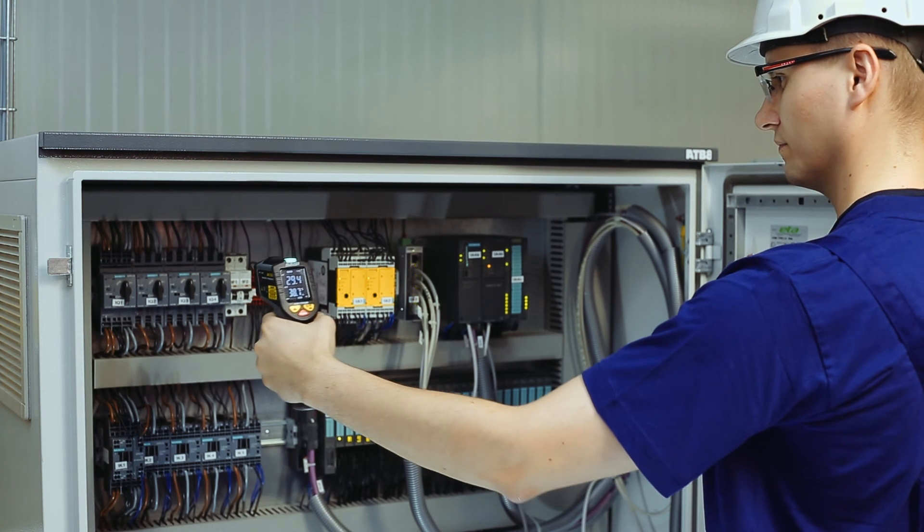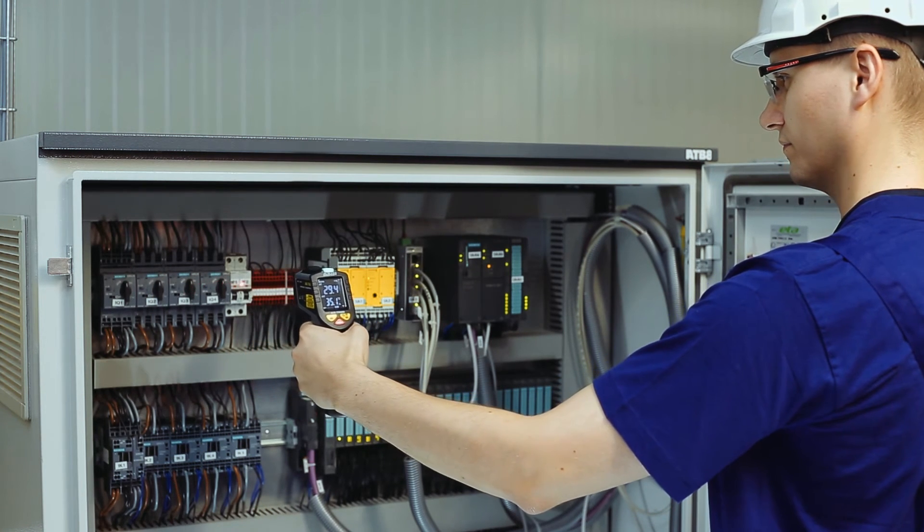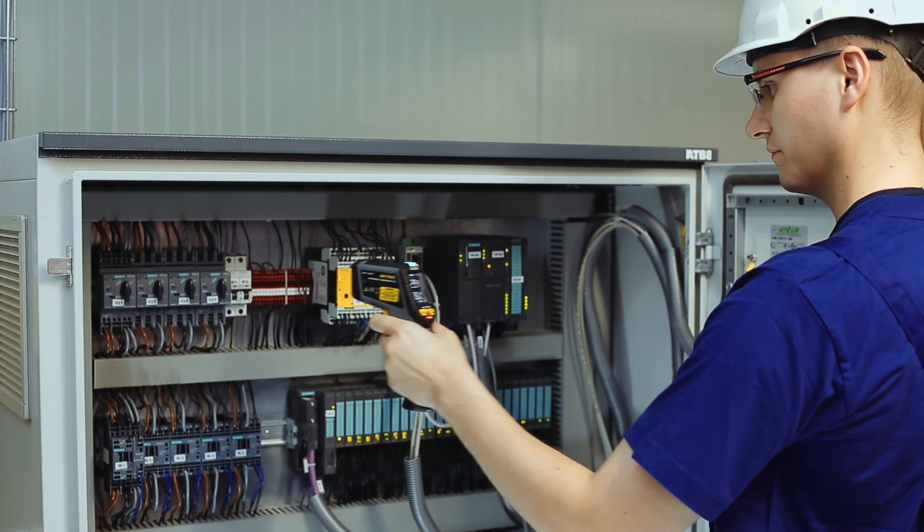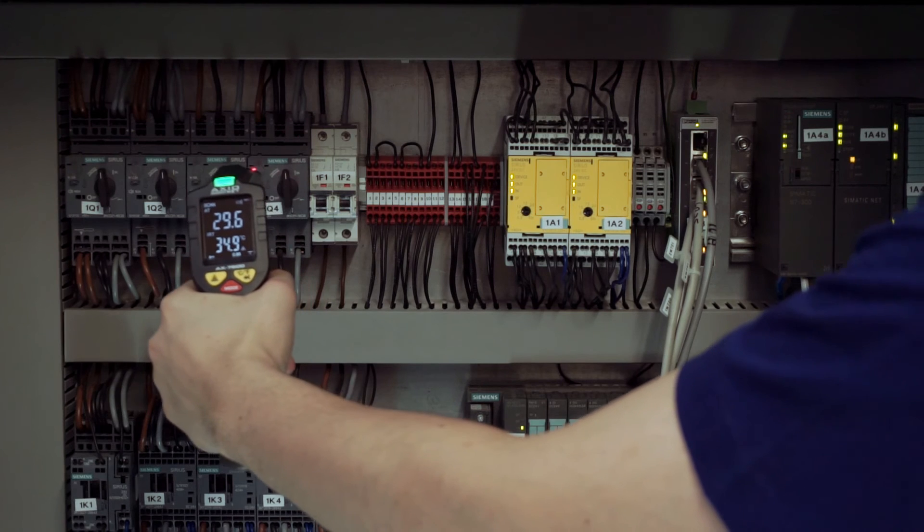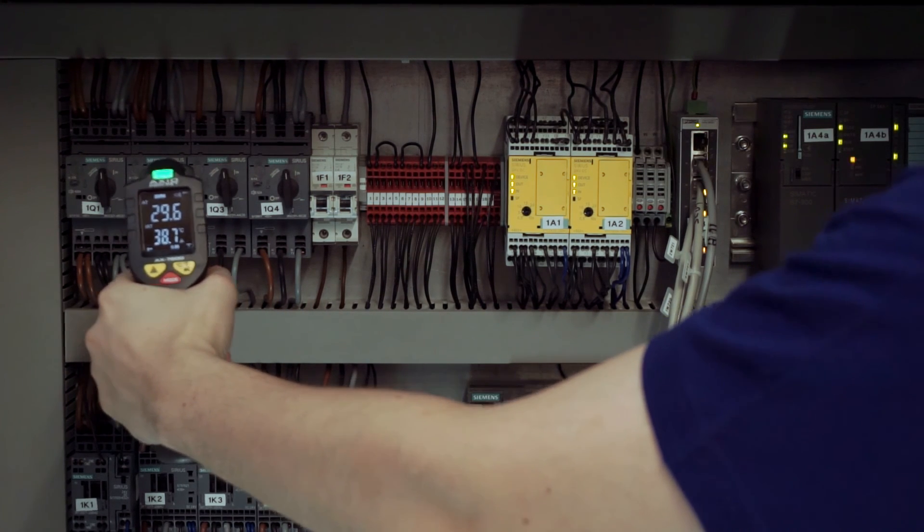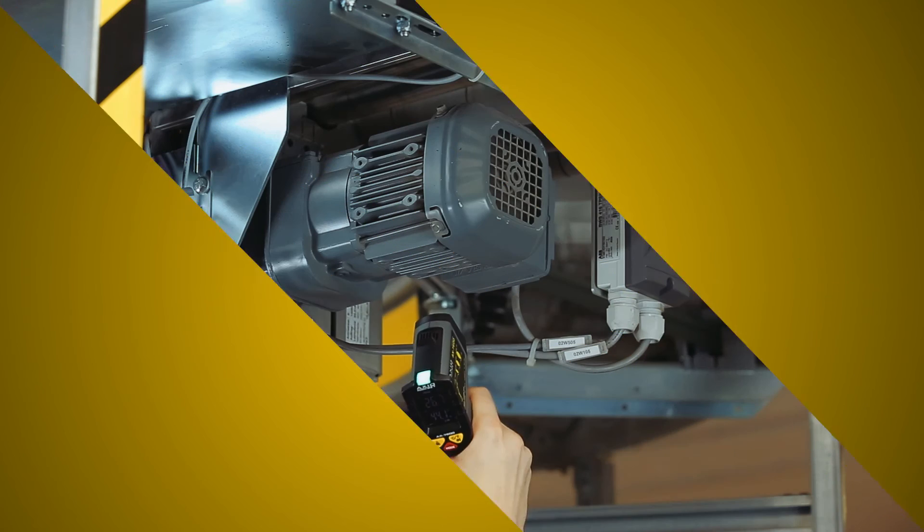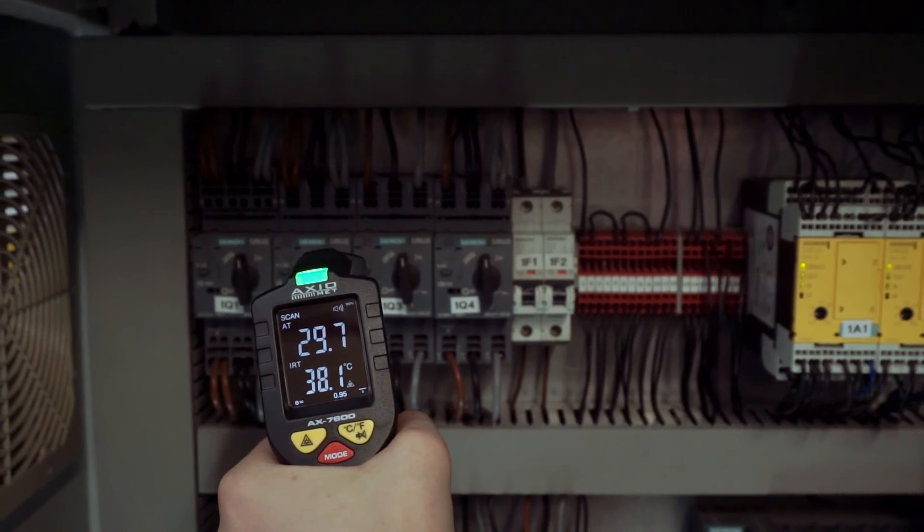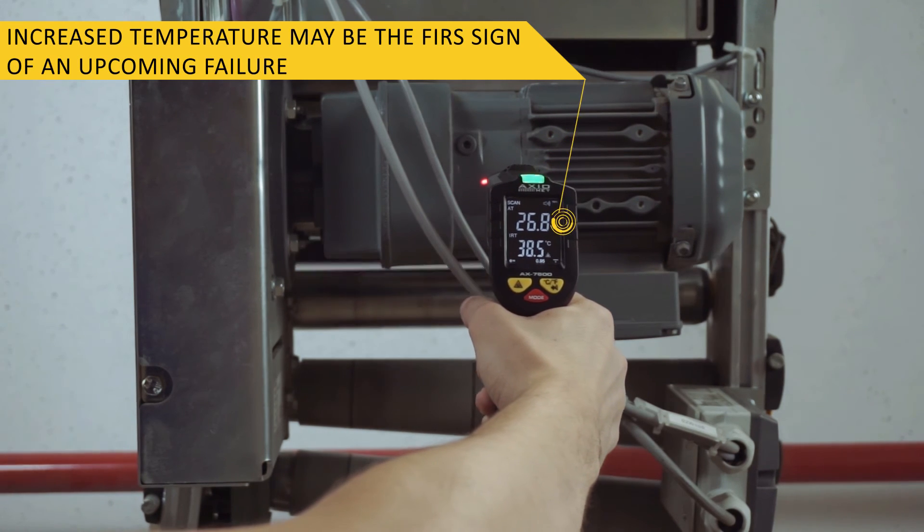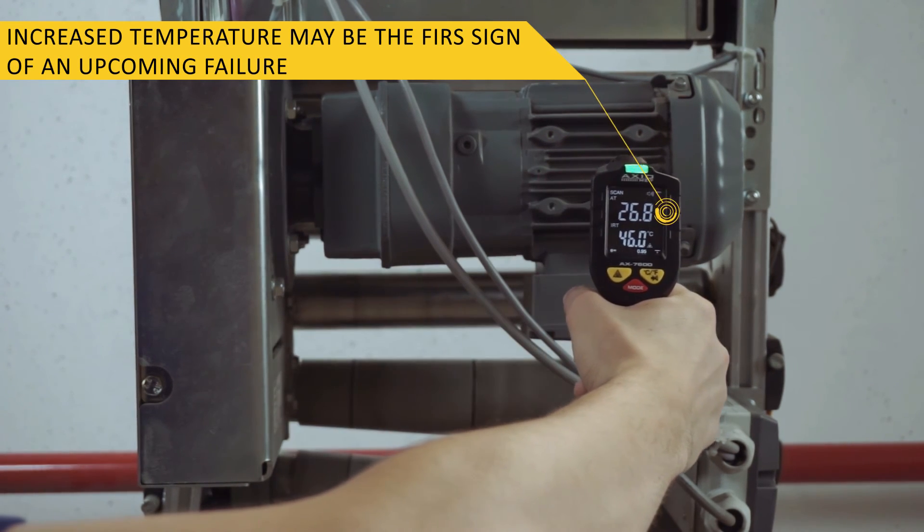The AX7600 pyrometer does not introduce interference to the measurement area. It can measure temperature and humidity and perform preliminary assessment of environmental parameters. Thus, monitoring of machine and equipment parameters is easier. An increased temperature may be the first sign of an upcoming failure.